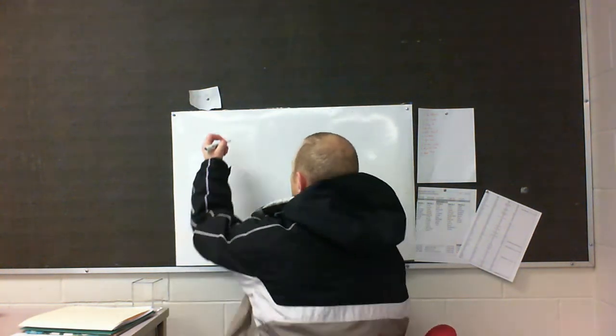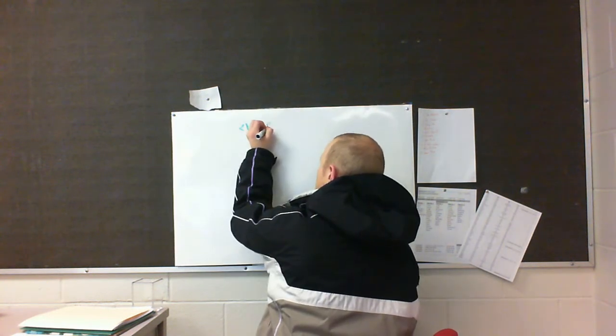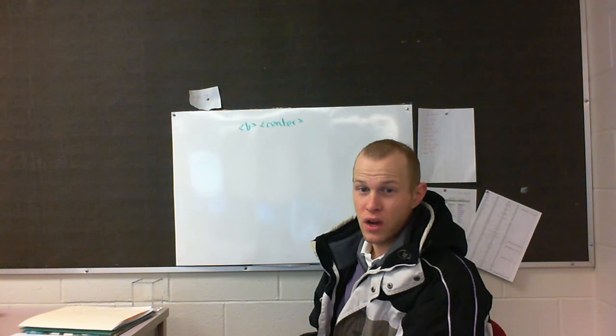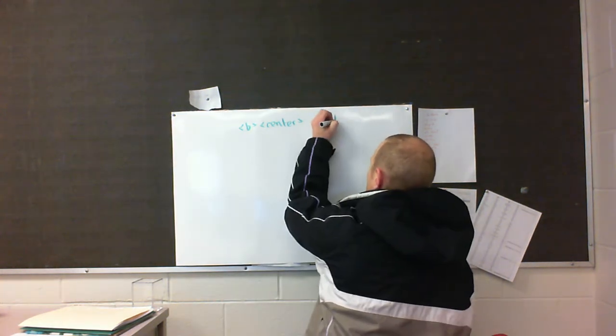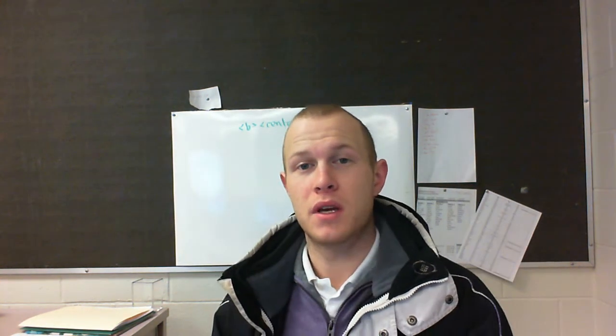So today we are going to learn about table headers and the colspan and rowspan attributes. First I'm going to give you a little brief synopsis. Table headers are basically just an easy way to make something bold and centered within a table. Instead of using the bold and center tags, all you've got to do is use a table header tag, which is TH. So that's simple — we'll go over that in class today.